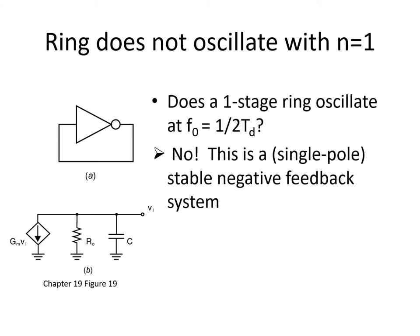To better understand the operation of a ring oscillator, it's worth thinking about the case where N equals 1. If you're interested in producing a high-frequency ring oscillator, it makes sense to use the fewest possible stages. We said that the oscillation frequency equals 1 over 2N·TD, so to maximize frequency, it might make sense to use the smallest possible N. You might think a low logic level at the oscillator input would give rise to a high logic level TD seconds later, which would cause the output to toggle back again another TD seconds later, producing oscillations at a frequency of 1 over 2TD. But that intuition would be false.